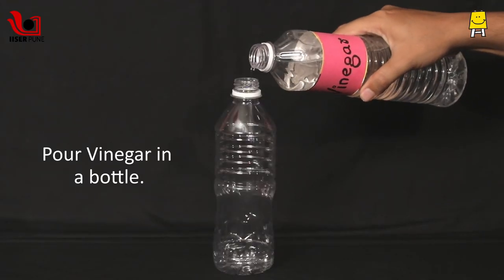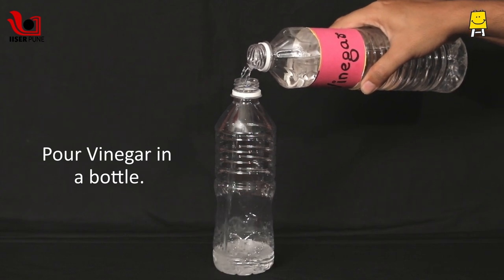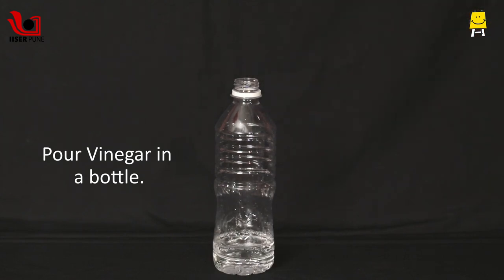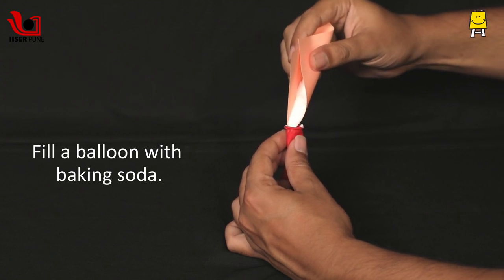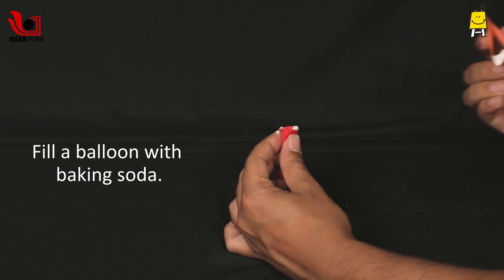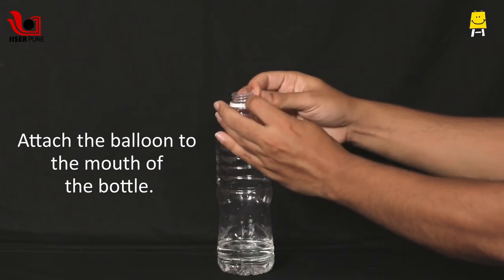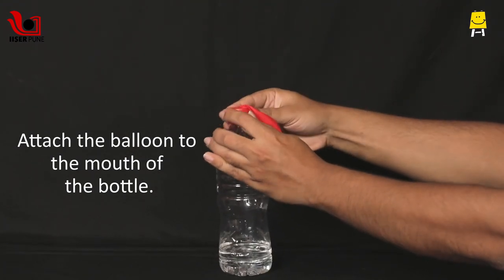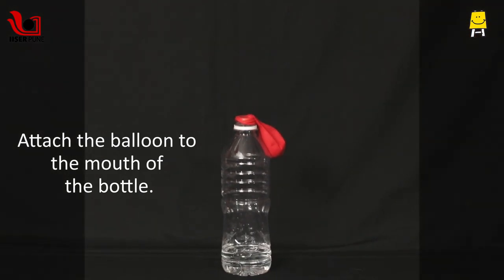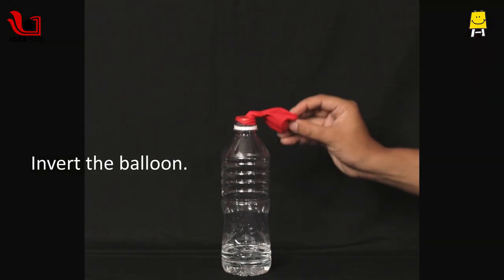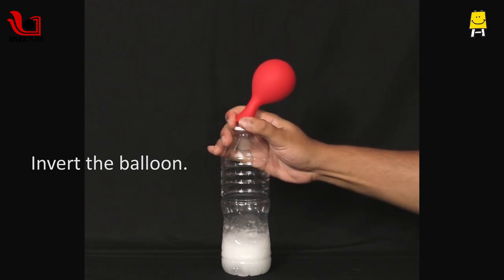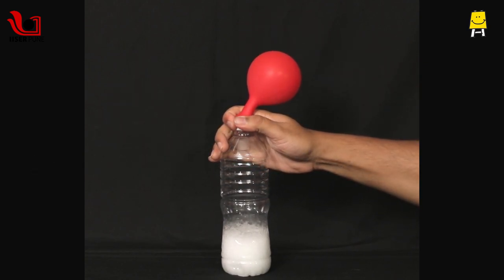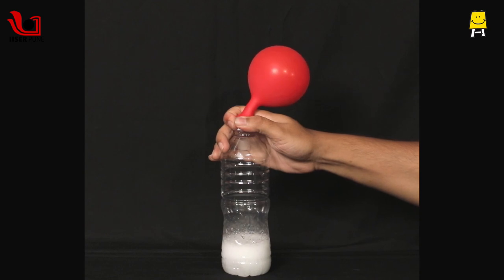Pour approximately 30 ml of vinegar in a bottle. Fill a balloon with baking soda using a spoon or paper. Attach the balloon to the mouth of the bottle. Invert the balloon so that the baking soda falls into the vinegar. The gas produced is then collected in the balloon.